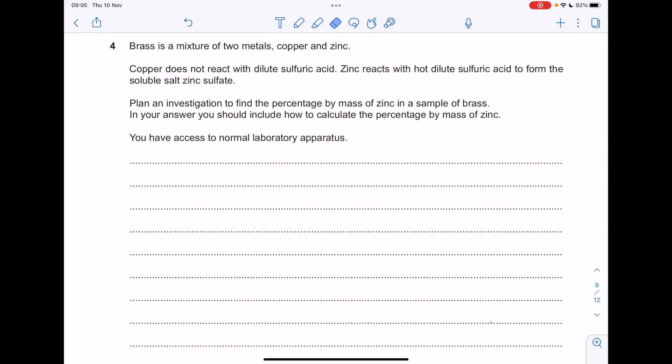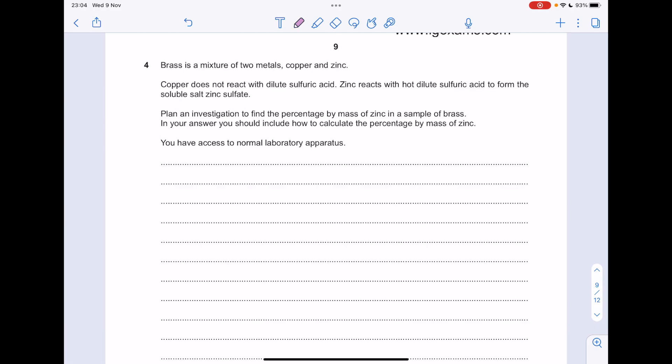Brass is a mixture of two metals, copper and zinc. Copper does not react with dilute sulphuric acid. Zinc reacts with hot dilute sulphuric acid to form the soluble salt zinc sulphate. Plan an investigation to find the percentage by mass of zinc in a sample of brass. In your answer, you should include how to calculate the percentage by mass of zinc if you have access to normal laboratory apparatus. So this isn't as clear cut as the variable layout type of questions. However, let's think about what it is we're after.